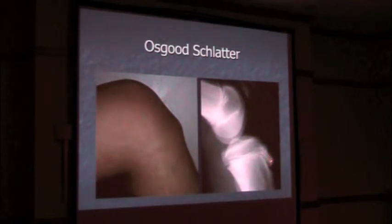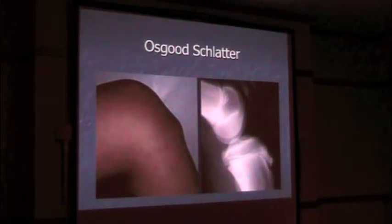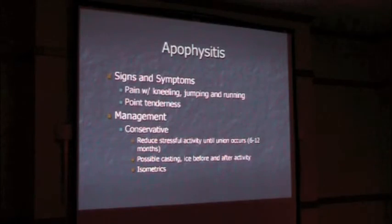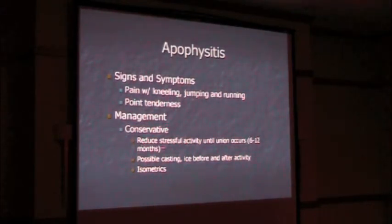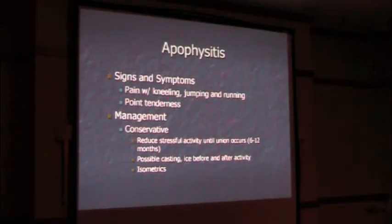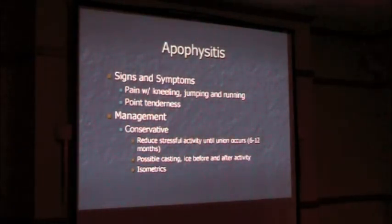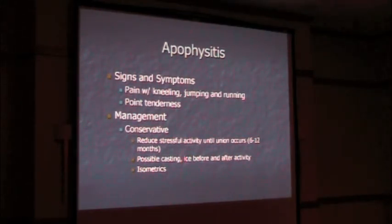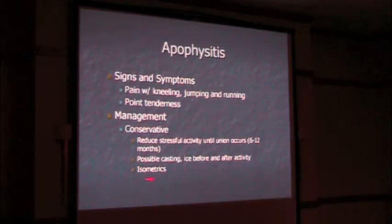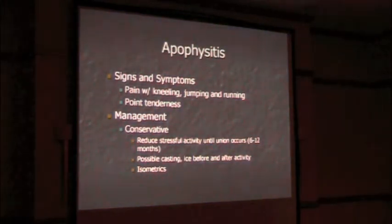This is what Osgood-Schlatter's looks like — there's where the patella tendon inserts, and this is an open growth plate that can start getting fragmented or look very abnormal. Management reduces stressful activity until union occurs. These kids keep getting these problems as they play sports until their growth plate is shut down. Make sure parents understand: take a break, let the pain and swelling go away, then return to sports. Possible casting if the patient is not compliant. Isometrics, strengthening, and stretching are key.